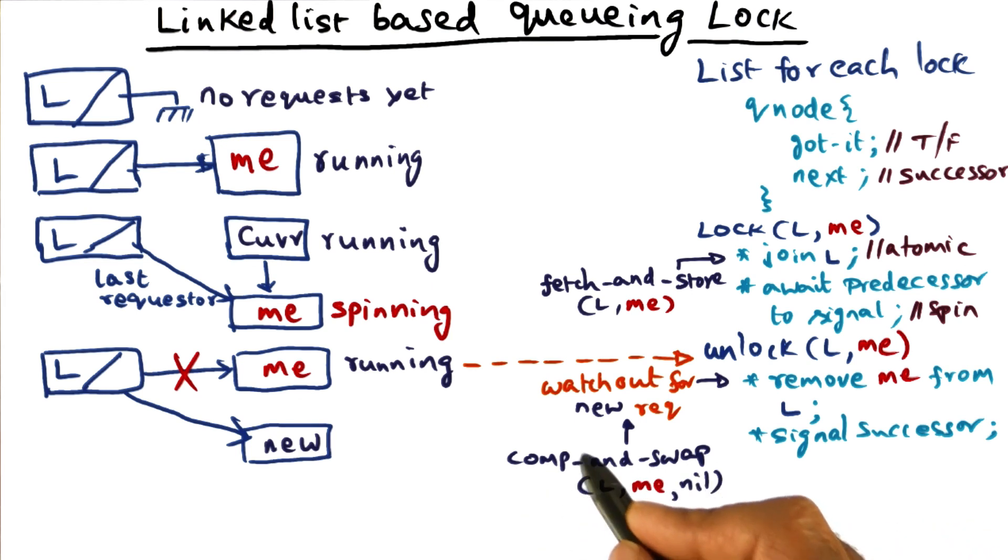Again, this is an atomic instruction, and this atomic instruction may be available in the architecture, but if it isn't, then you have to simulate it using test-and-set instruction.